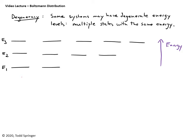Degeneracy is usually denoted by the letter G. So we would say G1 — the number of states with energy E1 — is 2. G2 is equal to 4. G3 is equal to 5. In other words, G_n is equal to the number of states with energy E_n.